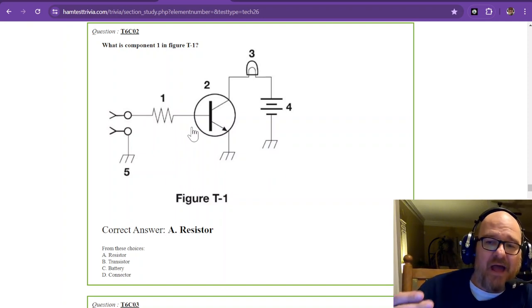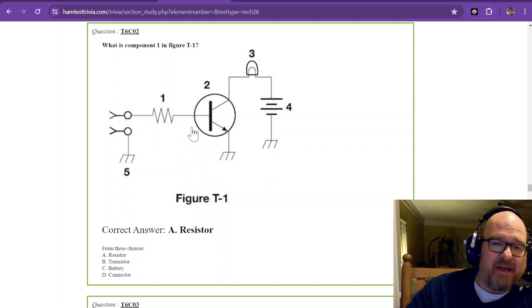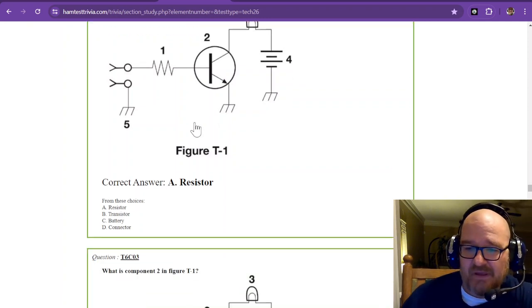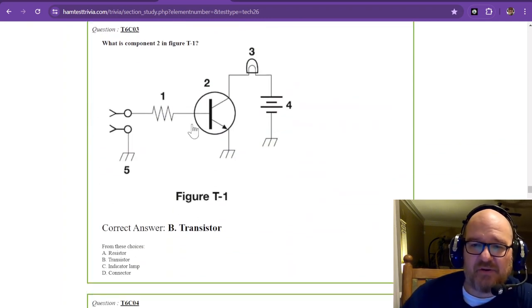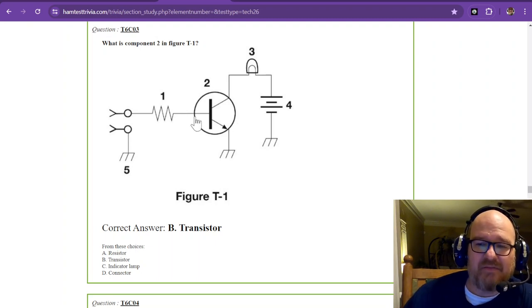Now, remember, out of this sub-element 6, Charlie, you're only going to get one question. There are 35 sub-elements to element number 2. And so you get one question from each, usually. Okay, so let's go down to question 3. What is component 2 in figure T1? That is a transistor.